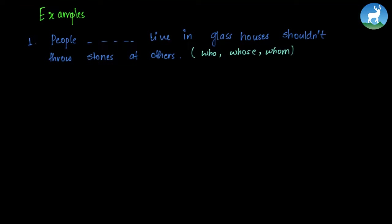'People ___ live in glass houses shouldn't throw stones at others.' The options are whose, who, or whom. People here is the subject — if we choose whom, that would be incorrect because whom refers to the object. Since we're referring to the subject, that's people, we use who. 'People who live in glass houses shouldn't throw stones at others.'